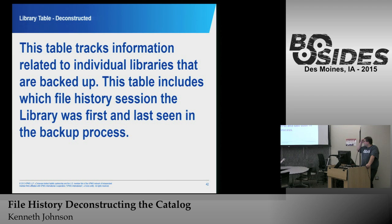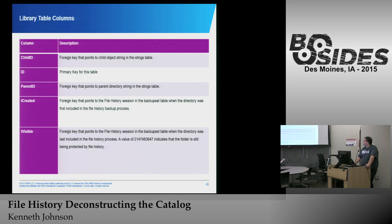The Library table tracks the individual libraries that can be backed up. Whenever you add a new one it's entered here based on a string ID. The child ID is the ID for the table, and it records when it was created and whether it's still visible. If there's any number in there besides the value 2147, that value is when it was last seen at that path. So if they move it, it'll record the new path as a new entry.